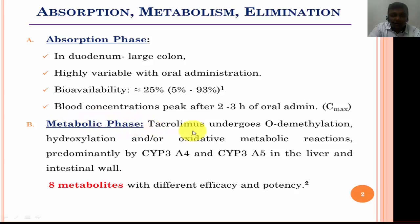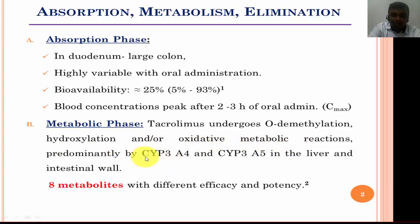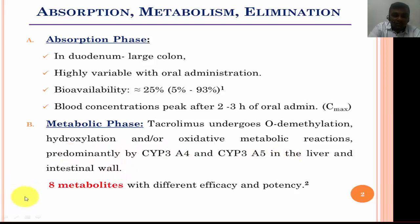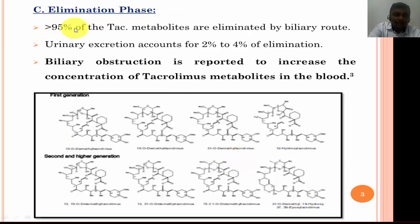Once tacrolimus has entered the blood circulation, the metabolic phase begins. Tacrolimus undergoes various biochemical reactions such as O-demethylation, hydroxylation, and oxidative reactions. These are predominantly carried out by the cytochrome CYP3A4 and CYP3A5 enzymes in the liver and intestinal wall. Eight metabolites with different efficacy and potency have been identified.